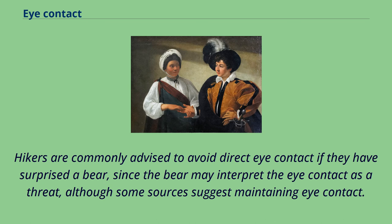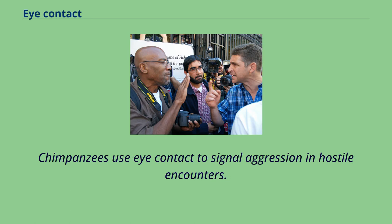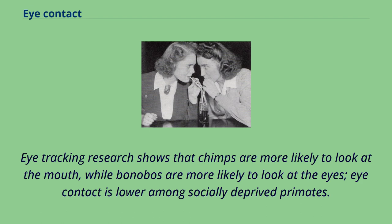Hikers are commonly advised to avoid direct eye contact if they have surprised a bear, since the bear may interpret the eye contact as a threat, although some sources suggest maintaining eye contact. Among primates, eye contact is seen as especially aggressive, and staring at them in a zoo can induce agitated behavior. Chimpanzees use eye contact to signal aggression in hostile encounters. Eye tracking research shows that chimps are more likely to look at the mouth, while bonobos are more likely to look at the eyes. Eye contact is lower among socially deprived primates.